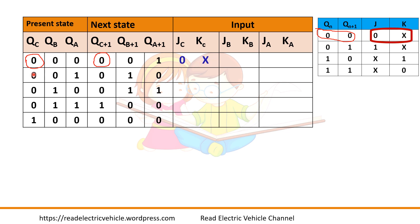So next combination is 0, 0. Write 0, X. Here also 0, 0, 0, X. Next 0, 1 you have. 0, 1 means it is 1, X.